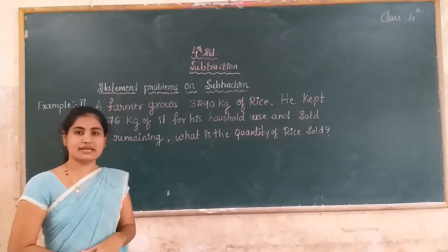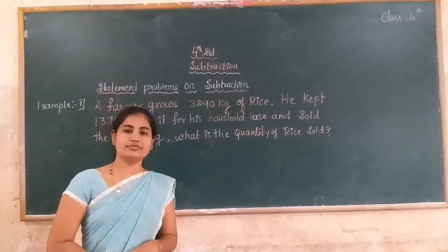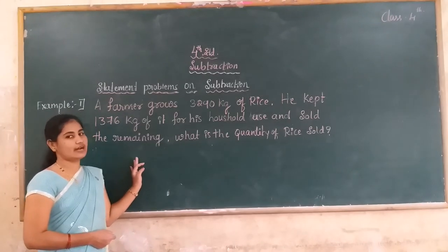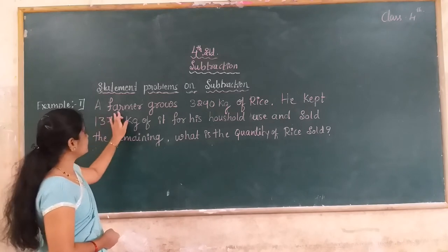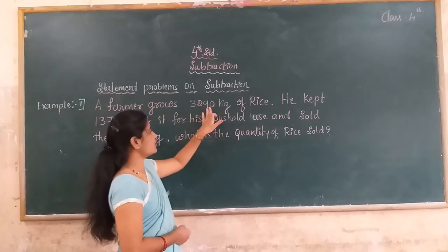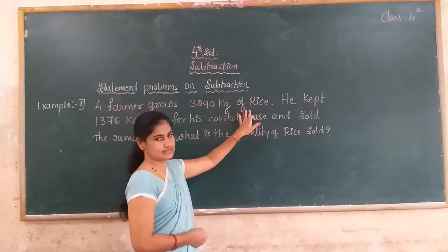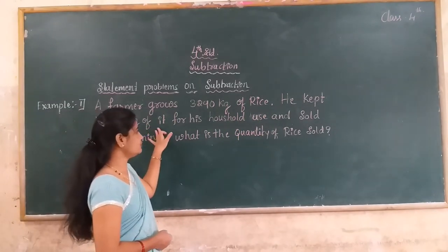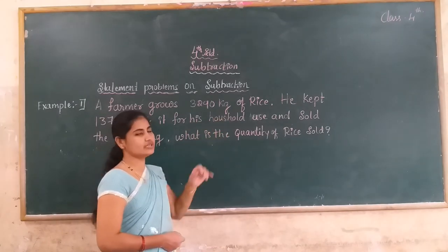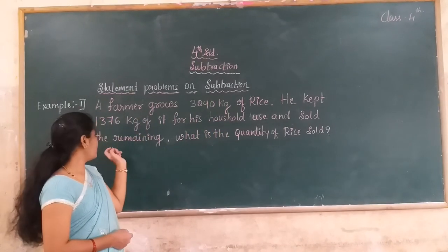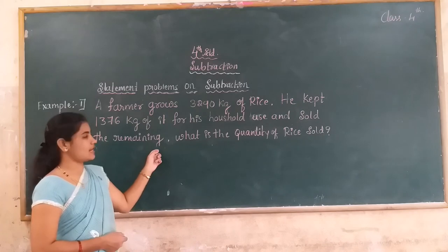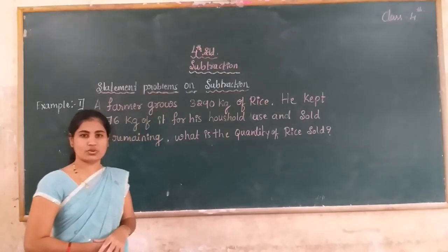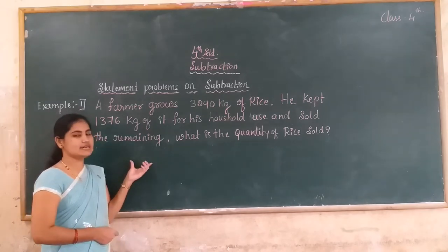Today we solve the statement problems on the function of subtraction. A farmer grows 3,490 kg of rice. He kept 1,376 kg for his household use and sold the remaining rice. What is the quantity of rice he sold? This is one of the statement problems on subtraction.